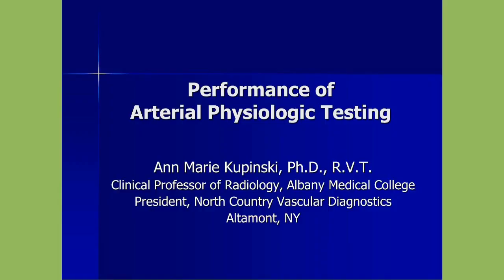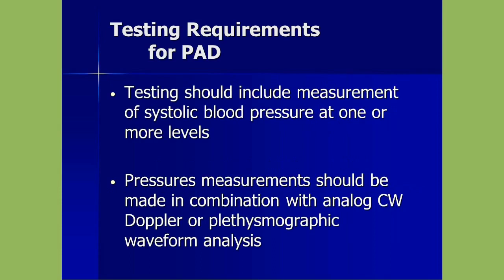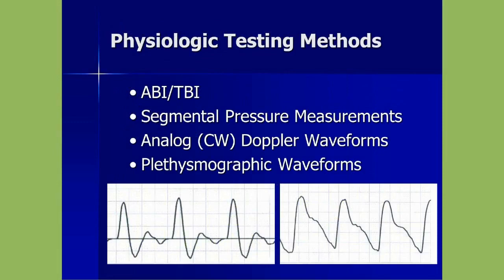I'm going to jump right in and tell you some of the trips, pitfalls, and tricks you need to know about performing arterial testing. When we talk about arterial testing from a physiologic standpoint, the primary methods include ABIs and TBIs, segmental pressures, analog CW Doppler waveforms, and plethysmographic waveforms, or PVRs. You can also acquire spectral waveforms in conjunction with this, but that's a topic for another webinar.